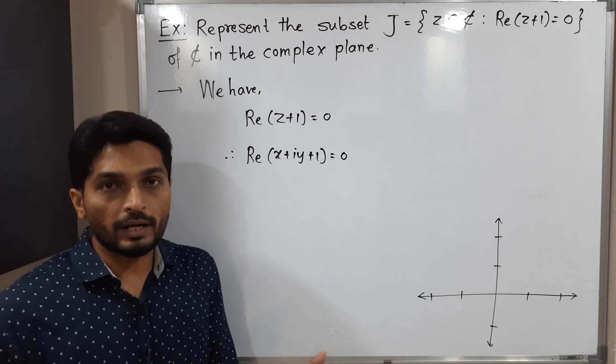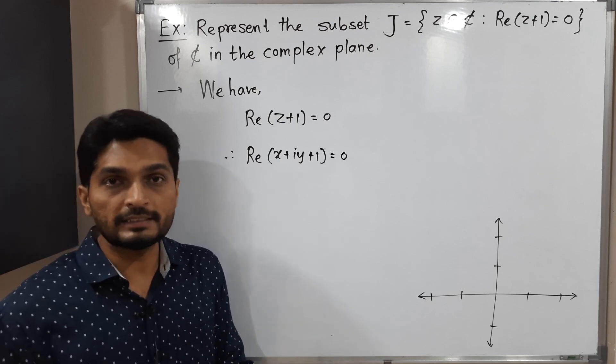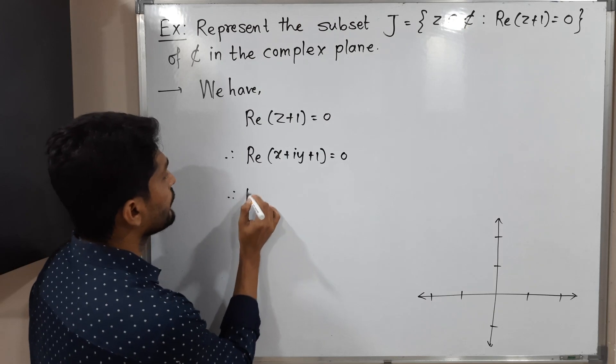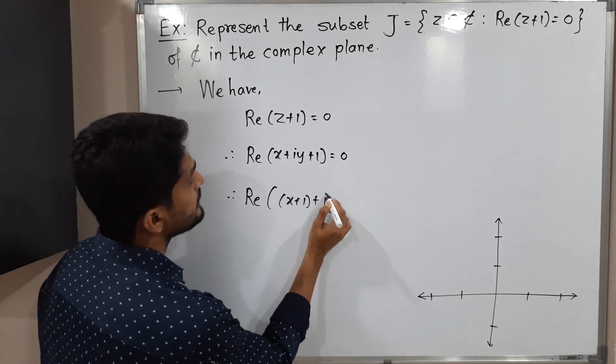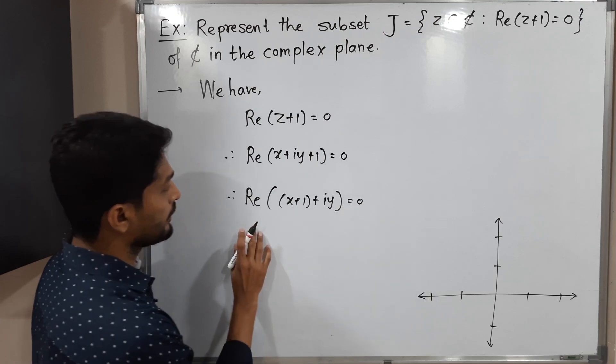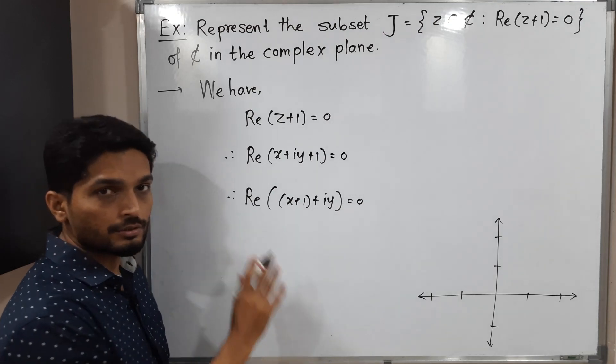Real part means without I, terms without I and imaginary part means term with I. So therefore real part, what is the real part here? X plus one plus IY equals zero. So it returns just real part only.